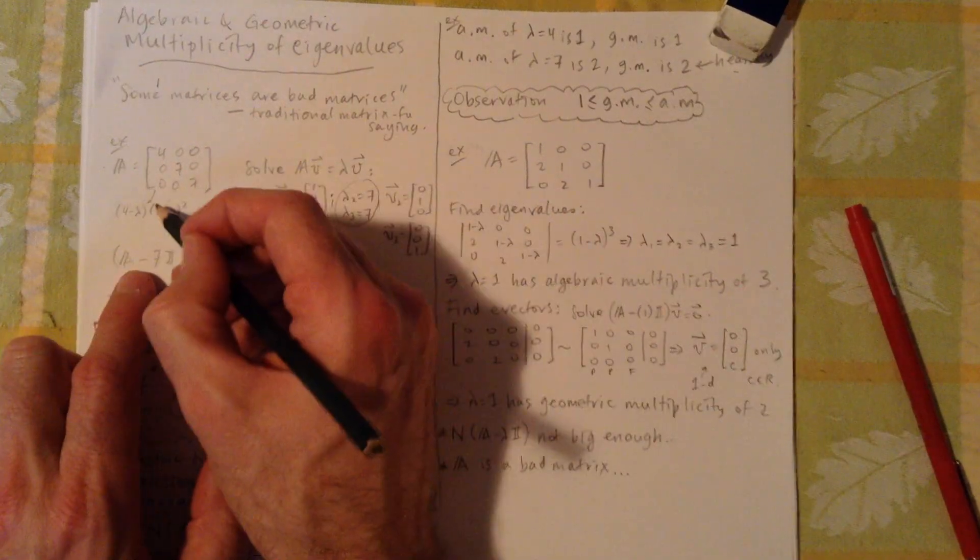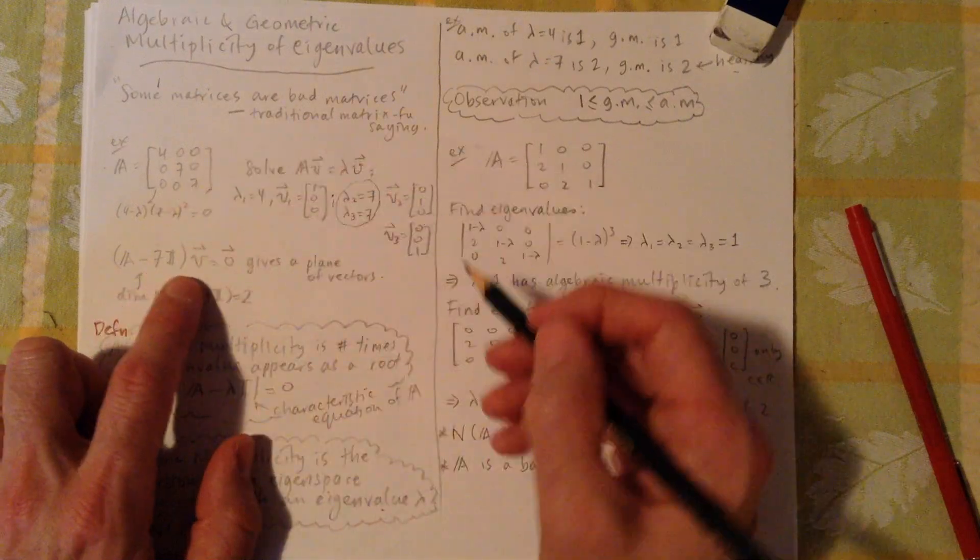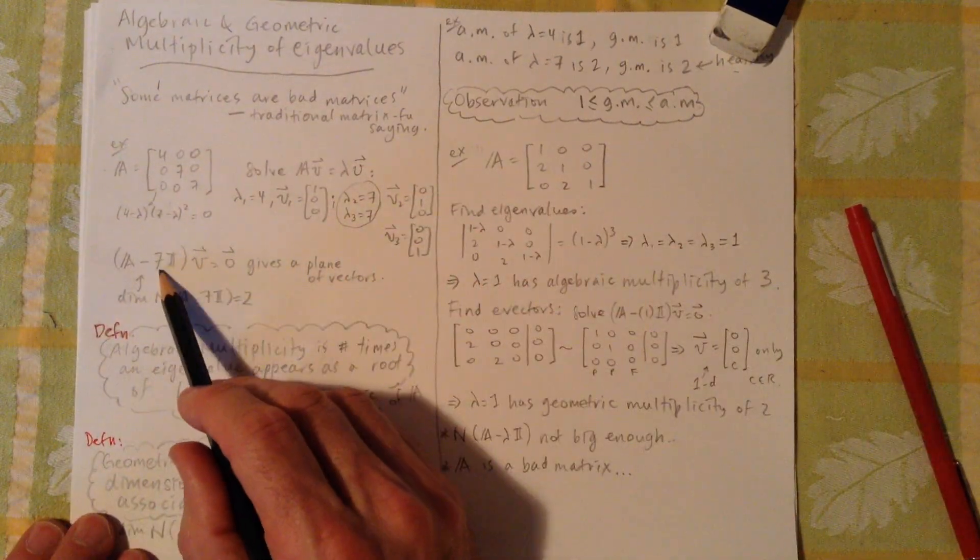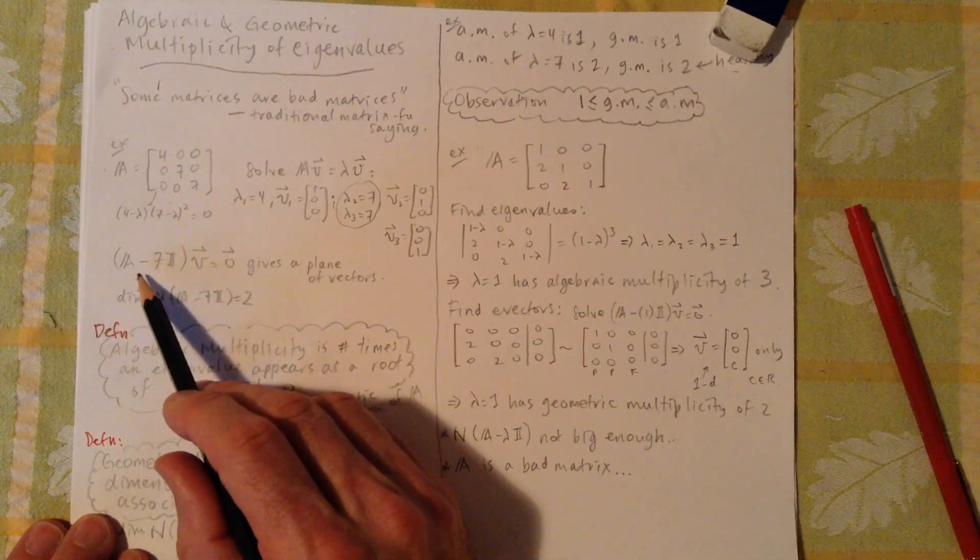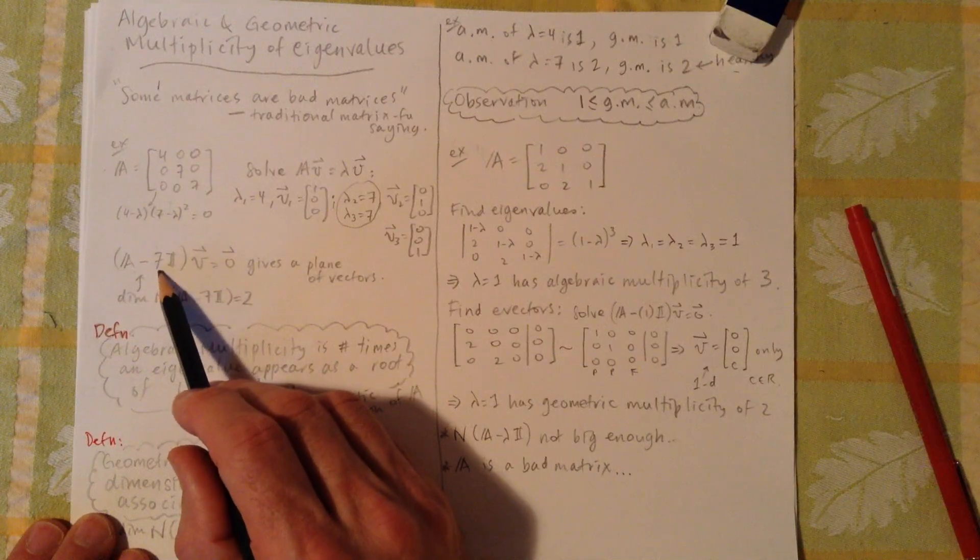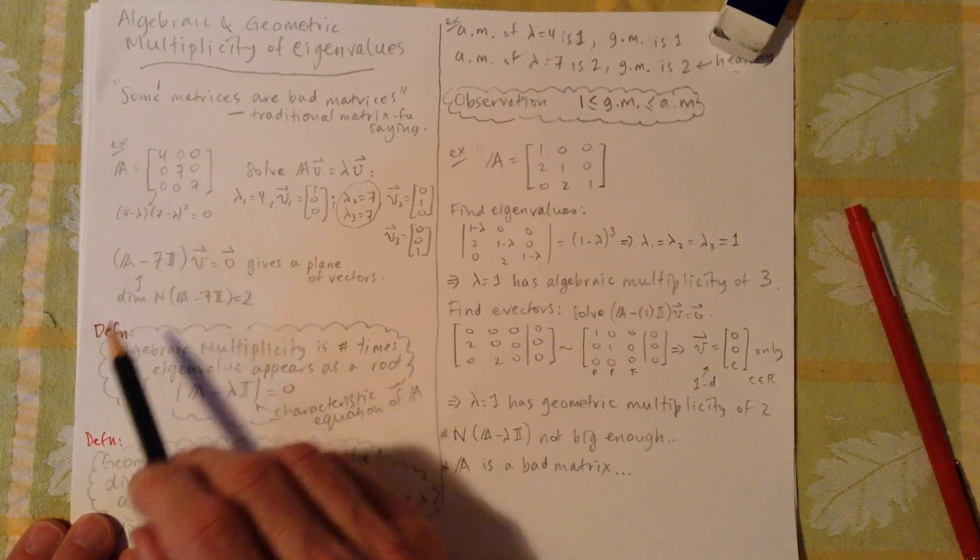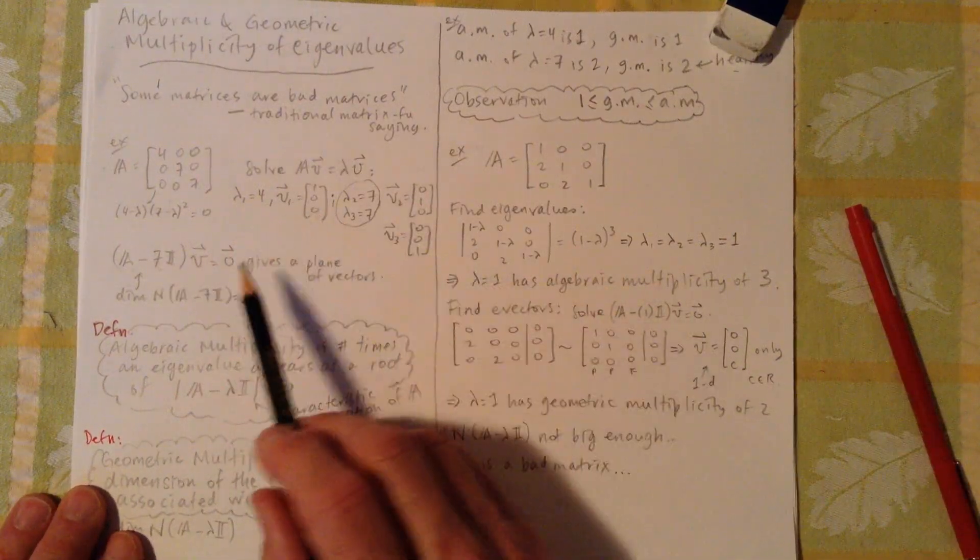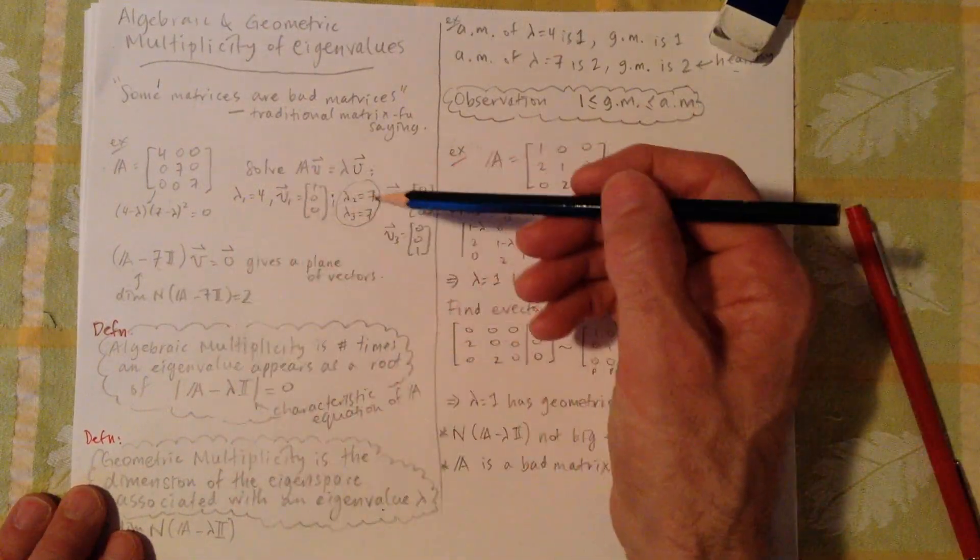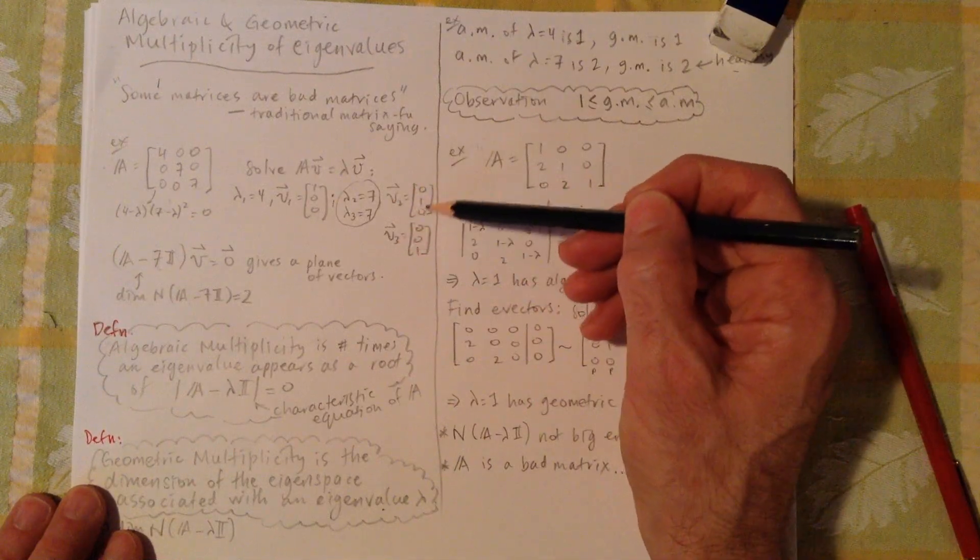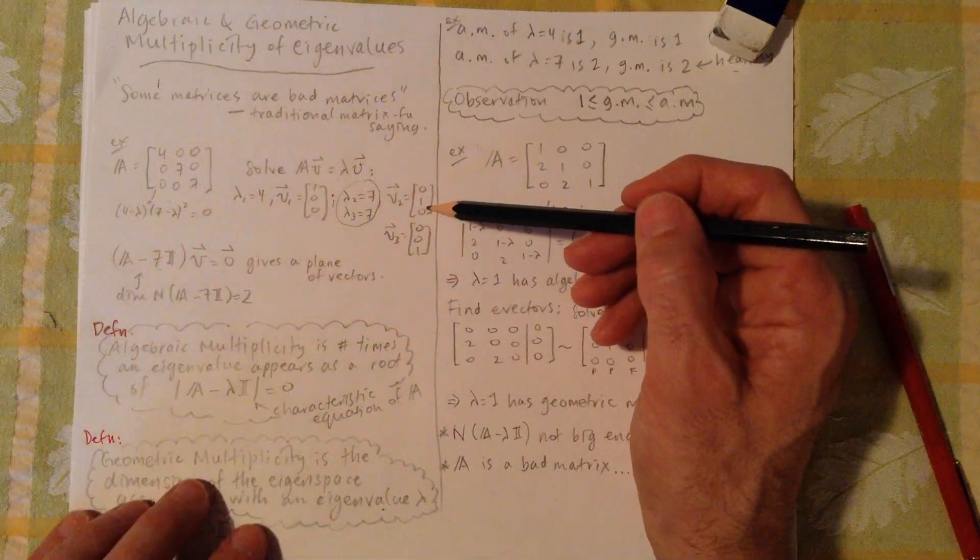Let me put it here. So it would be 4 minus lambda, 7 minus lambda squared is how that would work out, equals 0. So it appears twice here, but then when we go to find the eigenvectors associated with it, we can't use it twice. We simply have to put 7 in and see what happens. We're finding the null space of A minus 7 times I.